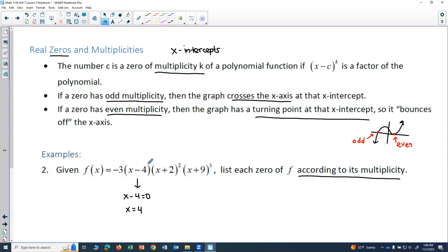There's no exponent written. And so this would be an implied 1 when there's no exponent written. So x equals 4 is going to be multiplicity 1.